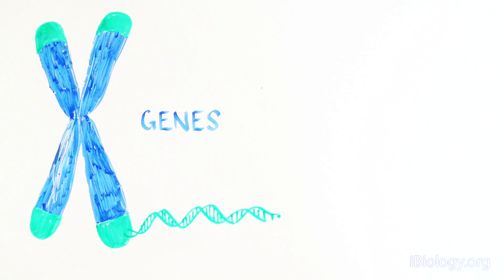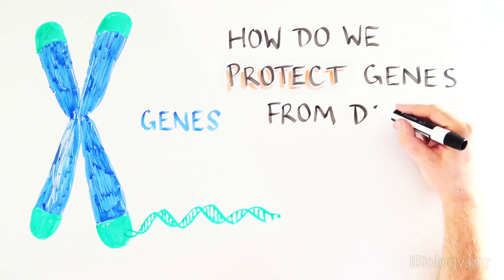This poses one of the biggest conundrums in biology. As cells divide, how do we safeguard all of the information encoded in our DNA that is so important to our survival? How are genes protected from deletion at the chromosome end?